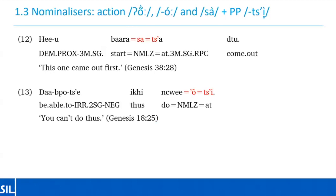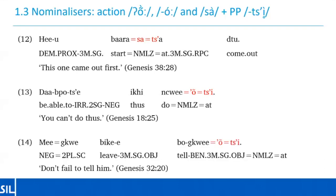Another use of the post-position with a nominalizer can be seen in examples 13 and 14. 'Da pot e ich wei ons' — you can't do thus. The verb 'da' seems to require this structure based on the data I have, and at least one other verb requires the same: 'me kwe bike bo kwe ons' — don't fail to tell him. So with 'bike' meaning leave or in this case fail, we have the 'on' attached to the tell verb.